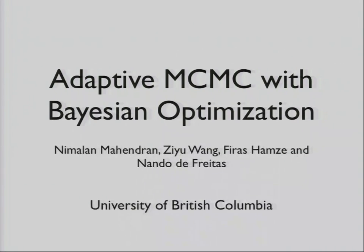This is work that I did with Ziyu, Firas, and Nando at UBC. What we're doing here is basically using Bayesian Optimization with Gaussian processes to adapt the parameters of an MCMC algorithm.